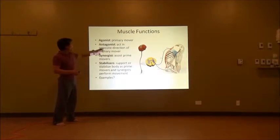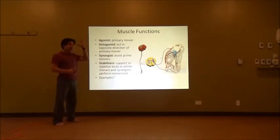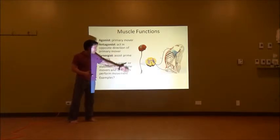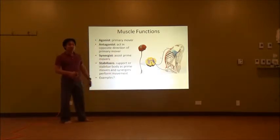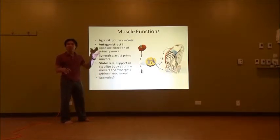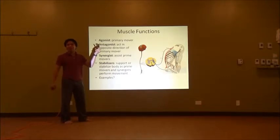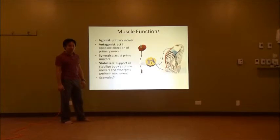Why is that important? Because when the brain tells the agonist to move, it simultaneously sends a signal to the antagonist to not contract. We can only contract or not contract muscles, so it makes sense: if you want to contract one side, you relax the other side. That's the relationship.